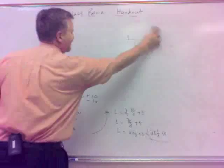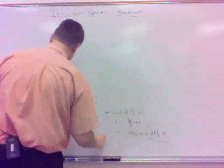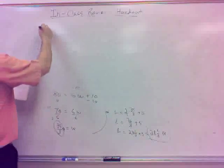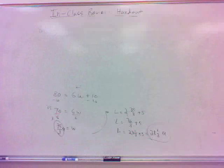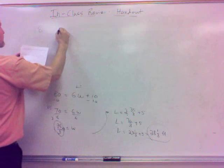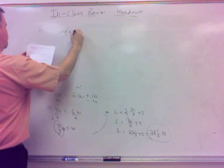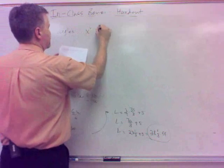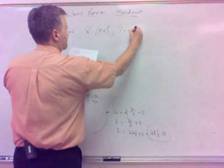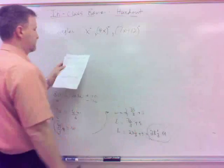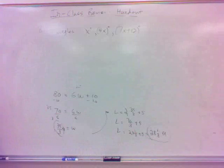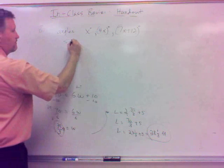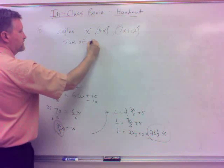Question or concern on that? Alright. Number 8 and 9. Do those in a row here just to make a point. On number 8, we've got a triangle with angles measuring x degrees, 4x degrees, 7x plus 12 degrees. Find the measure of each angle.